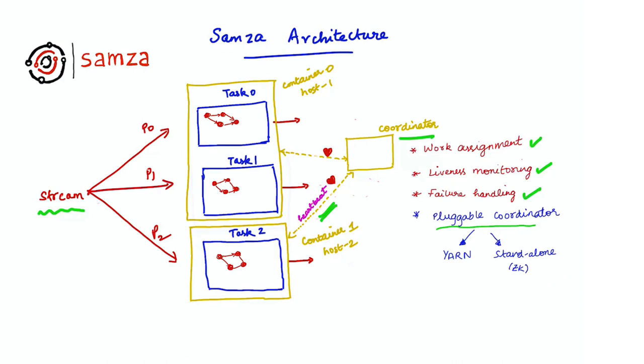It's worth noting that Samza is the only system that offers first-class support for both these deployment options. While some systems like Flink only support the framework model for stream processing, others like Kafka Streams only support the standalone model.